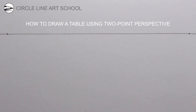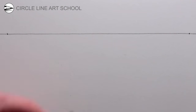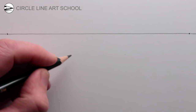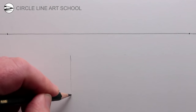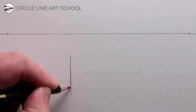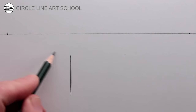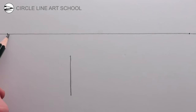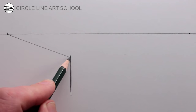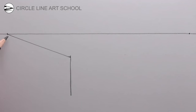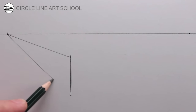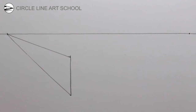The next step is to draw a vertical line towards the left of the center of your page and below the horizontal line — this will be the front corner leg of the table that we're drawing. Then draw the receding lines going to the left vanishing point, one at the top and one at the bottom of the vertical line, as parallel lines receding in perspective will appear to meet at the vanishing point.